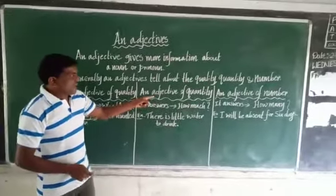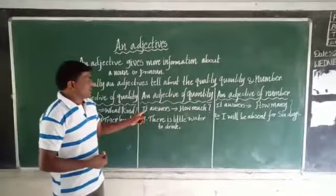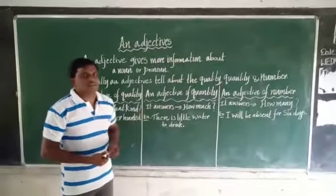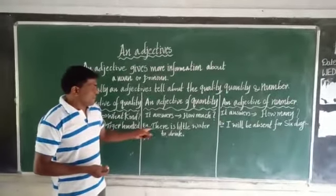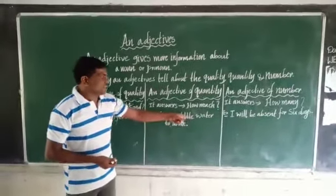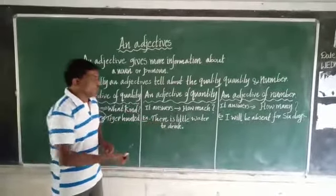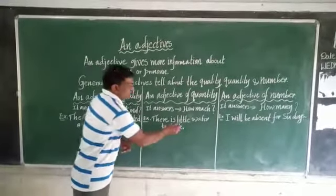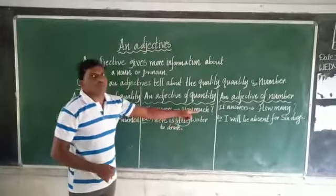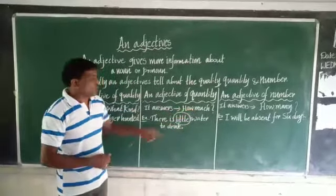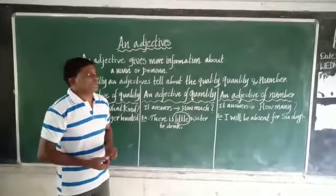An adjective of quantity. It answers 'how much'. For example, there is little water to drink. So, the word 'little' answers the question 'how much'. So, little is an adjective.